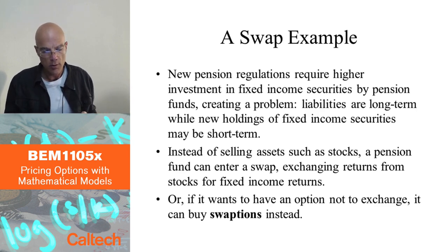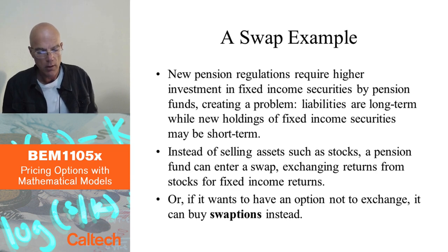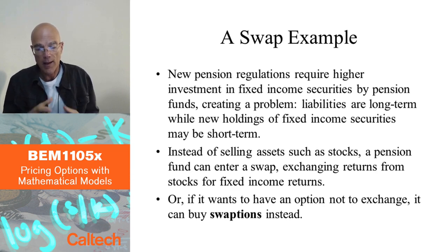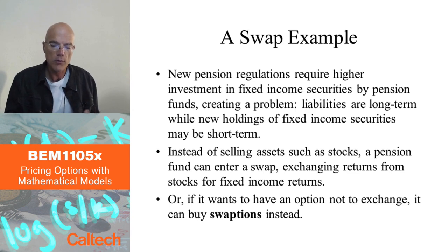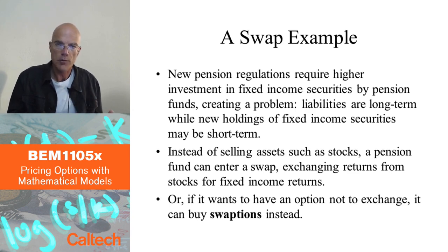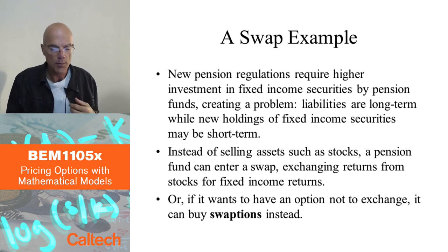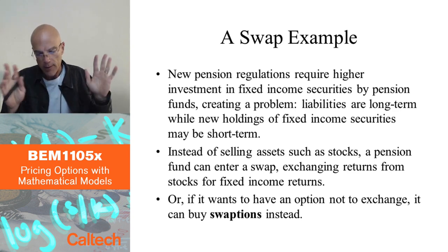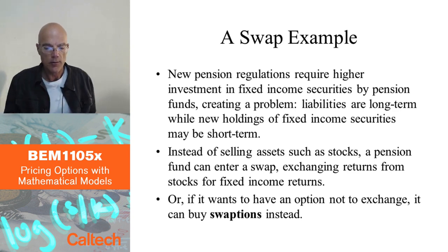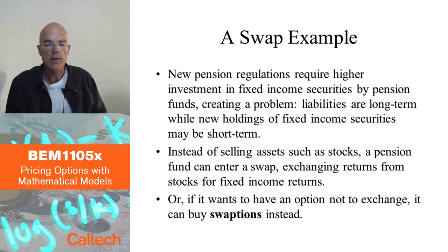There is also a more exotic instrument called swaptions. If you want the option not to exchange — if you don't want to — that's called a swaption: an option to enter a swap. That's already a more complicated, non-linear derivative.